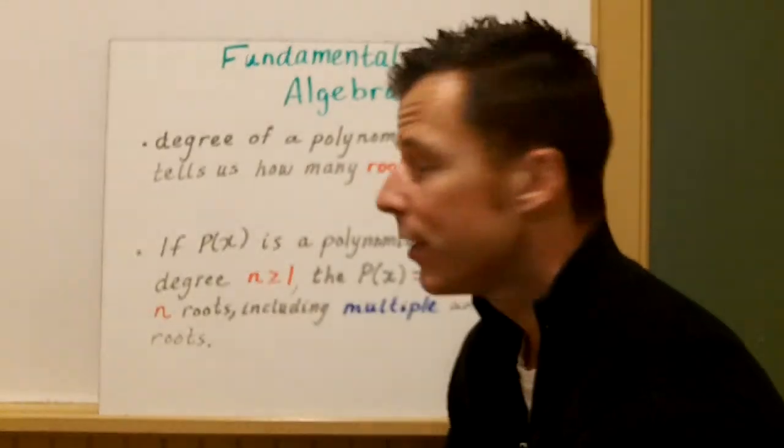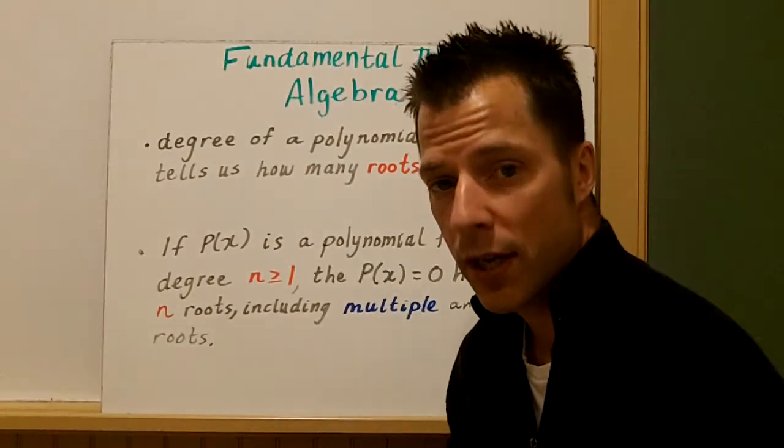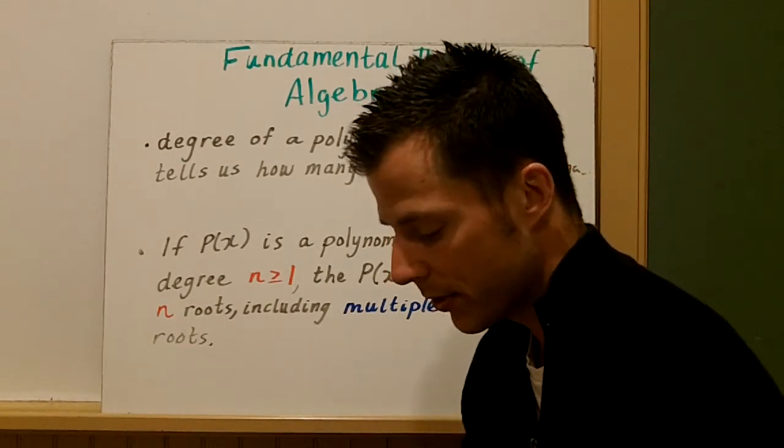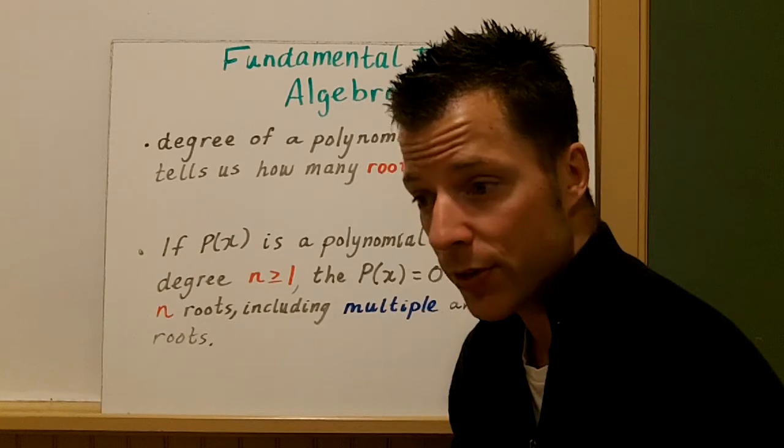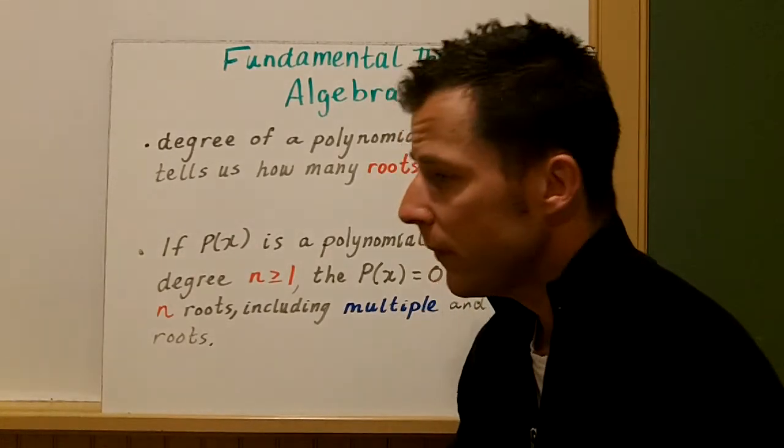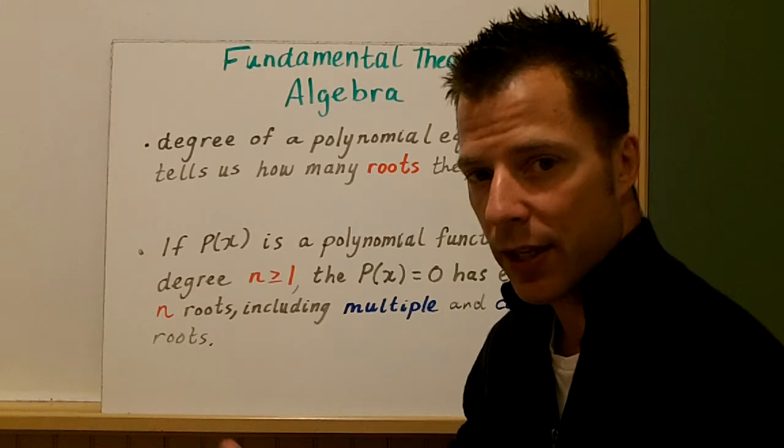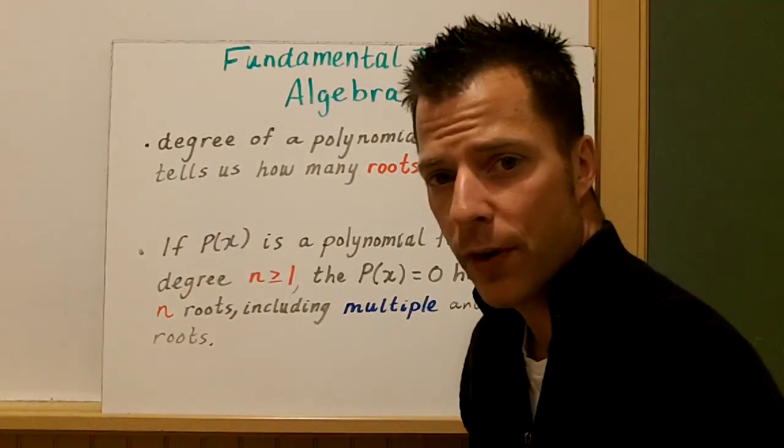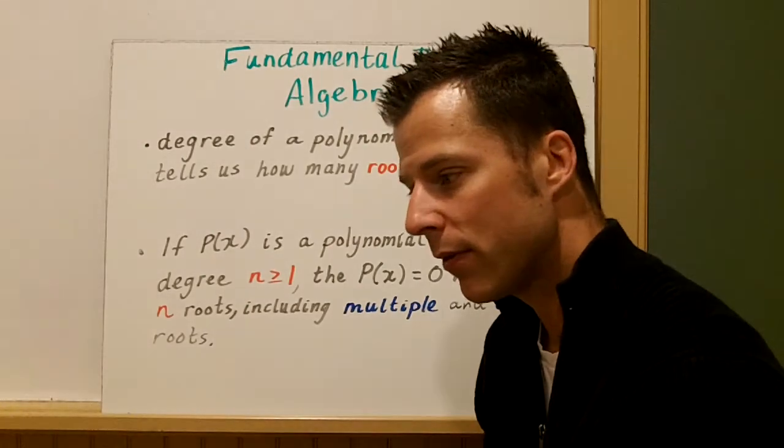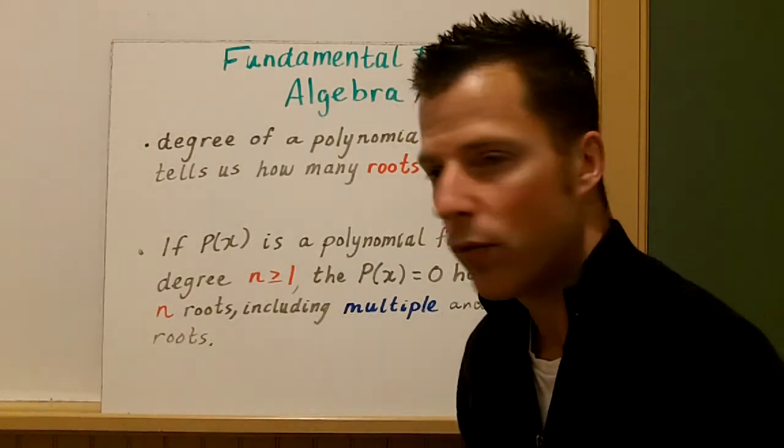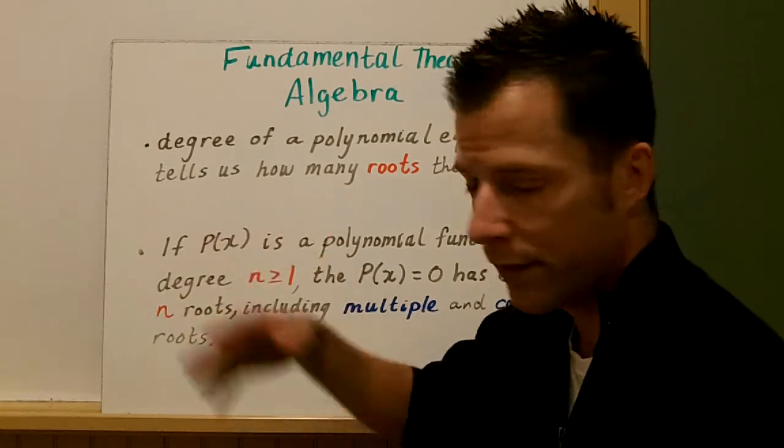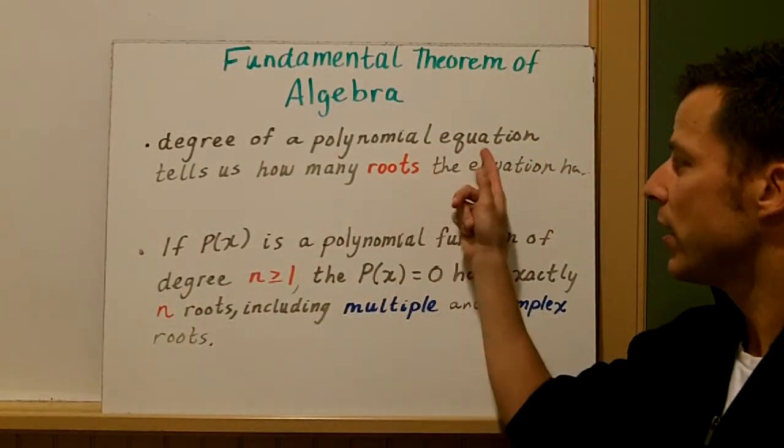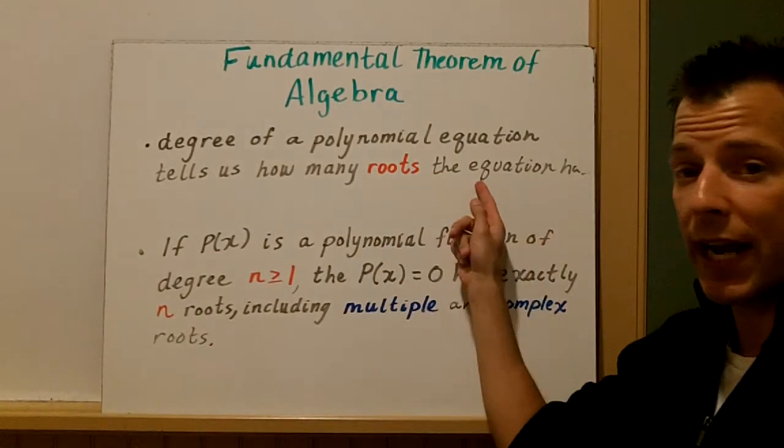Today we're going to talk about the fundamental theorem of algebra. It's a really nice rule for polynomials and something that we've seen through quadratics and other types of polynomials we've solved. It's been obvious but subtle. So we're actually going to look at what this fundamental theorem actually tells us and hopefully say, oh yeah, well we've already known that, but we're just going to formally define it. The fundamental theorem of algebra tells us that the degree of the polynomial equation tells us how many roots the equation is going to have.